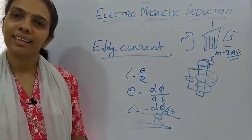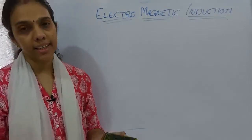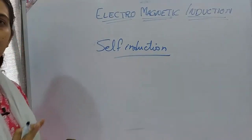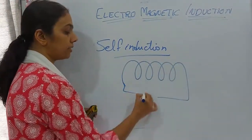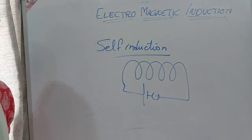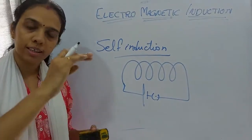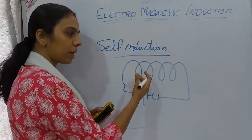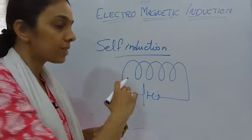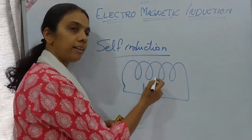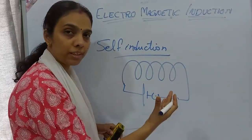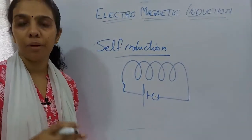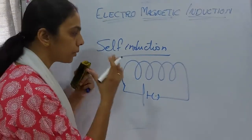Next we study self-induction. 'Self' means it relates to the coil itself. When current is passed through a coil and is increasing, a magnetic field develops and changes. This changing magnetic field induces an EMF in the same coil — the coil with changing current is itself in a changing magnetic field, so it develops an induced EMF.